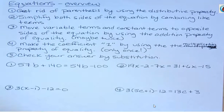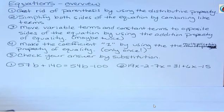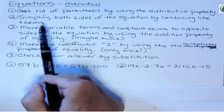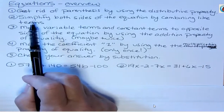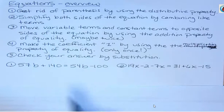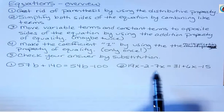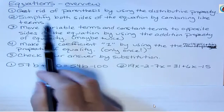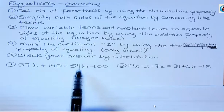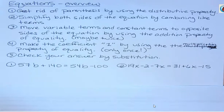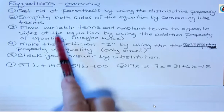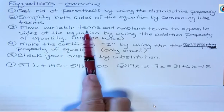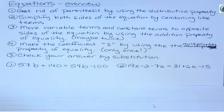The first two equations don't have any parentheses, so I don't need to worry about getting rid of parentheses. But I do need to do step two — simplify both sides of the equation by combining like terms — over here anyway. This one doesn't have any like terms on either side, so moving on to step three: I want to move the variable terms and the constant terms to opposite sides.